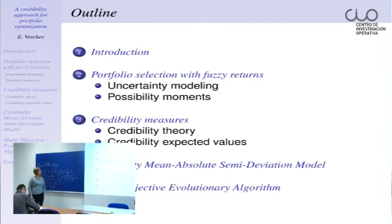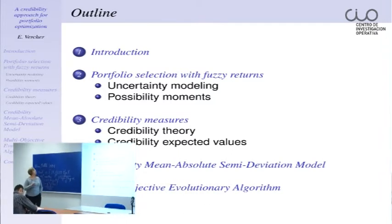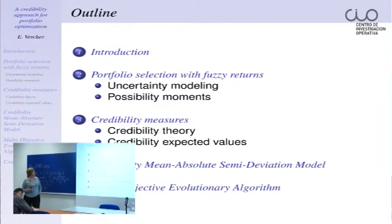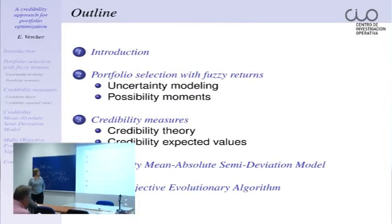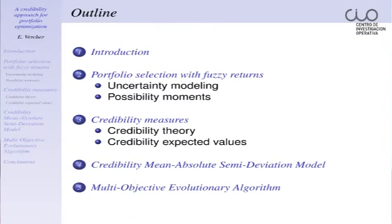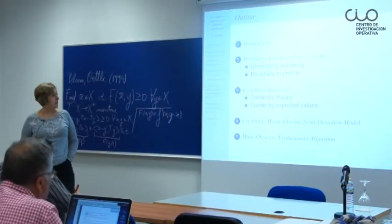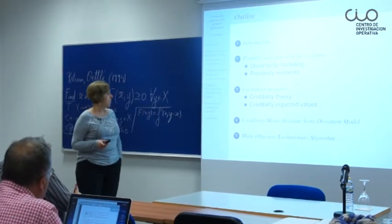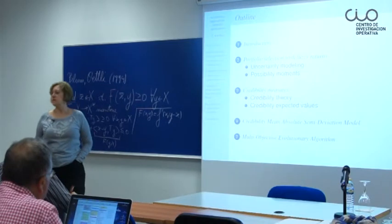First, we introduce portfolio selection and make emphasis on portfolio selection with fuzzy returns. Then we introduce our proposal for modeling uncertainty to measure the uncertainty of future returns on a given portfolio. We state some properties and equivalences between possibility moments and credibility expected values for LR-fuzzy numbers, and then state the multi-objective optimization problem associated with the credibility mean absolute semi-deviation model. We present an evolutionary algorithm to obtain efficient portfolios and select the best ones using a fuzzy value at risk.